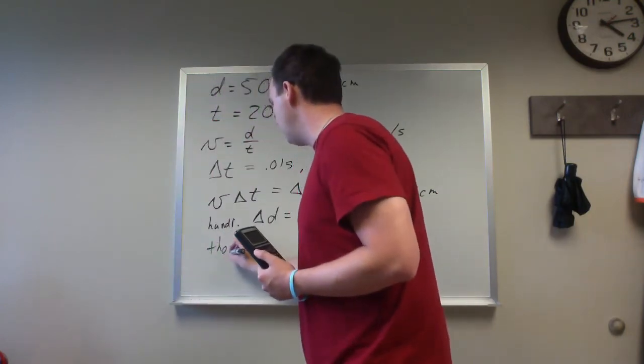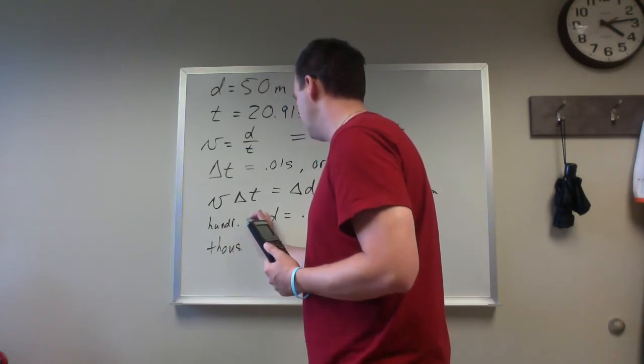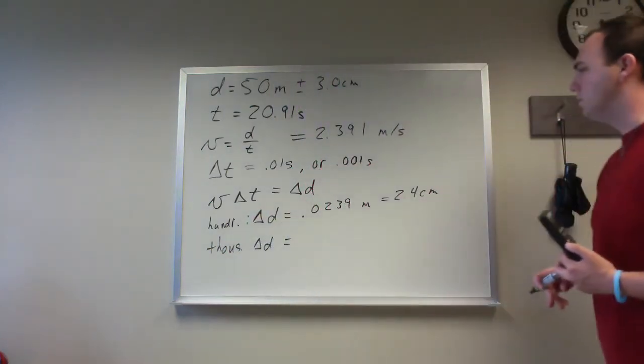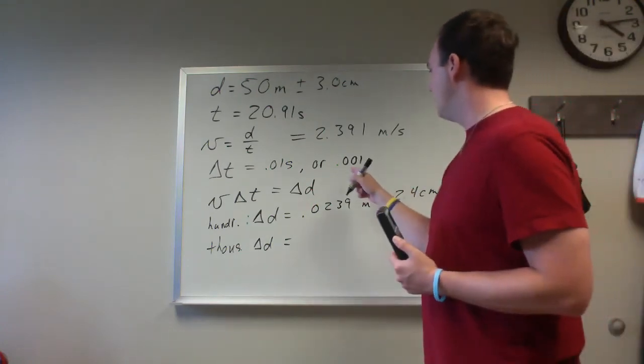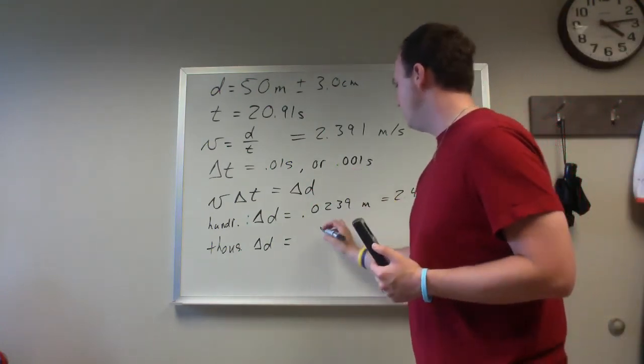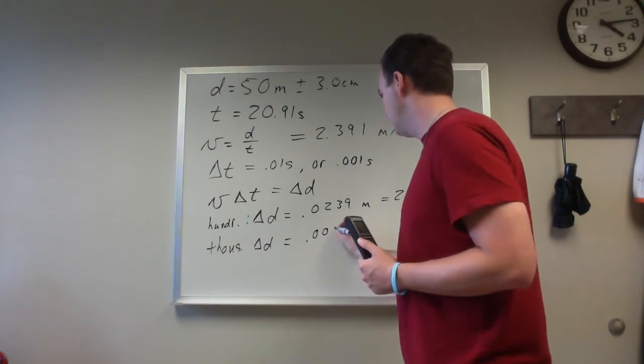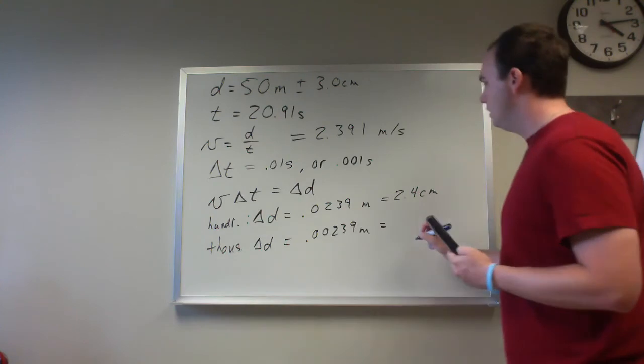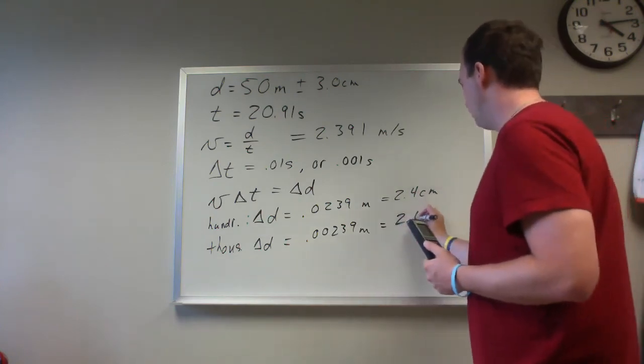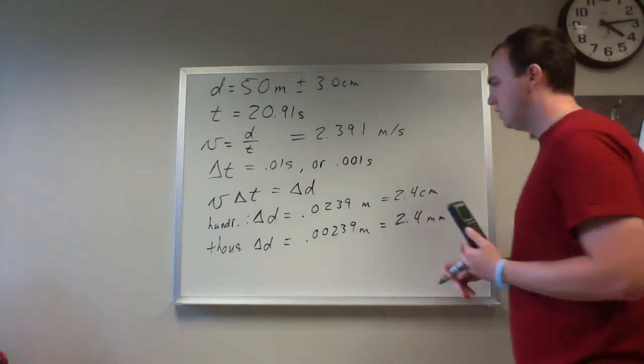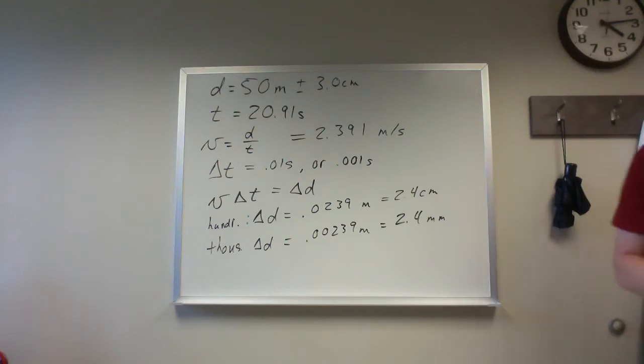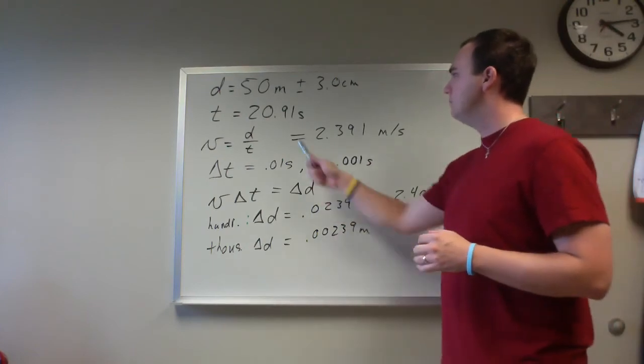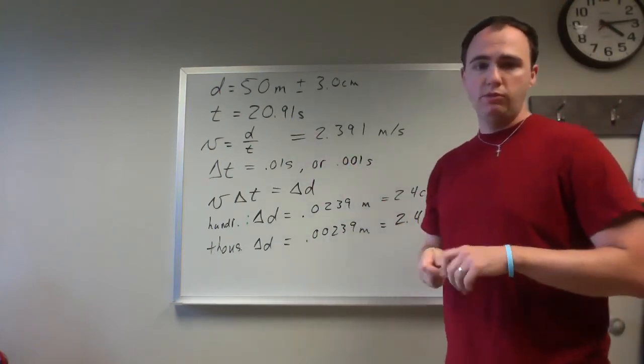But if I wanted to go to thousandths of a second, then my delta d would become, instead of 0.023, it would be 0.00239 meters, which is 2.4 millimeters.